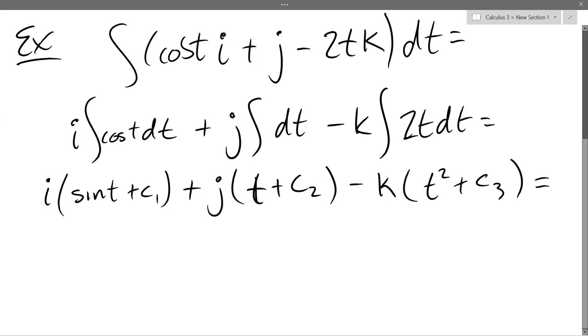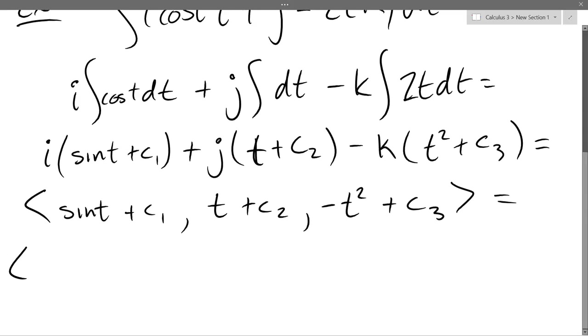And I'm going to reorder it, so I'm going to put all the variable part first and the constant part second. And I don't really like ijk, so let's go into bracket notation. So I'm going to go sine t plus c1 comma t plus c2 comma negative t squared. I could do minus c3, but I'm going to cheat a little bit and just say pretend c3 is negative or whatever. Add a constant, subtract a constant, same difference if you don't know the constant.